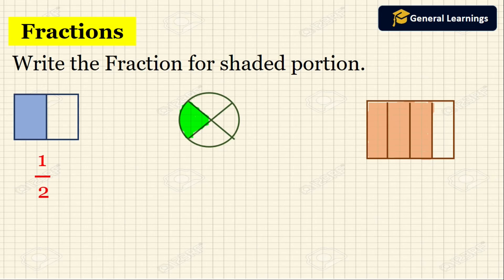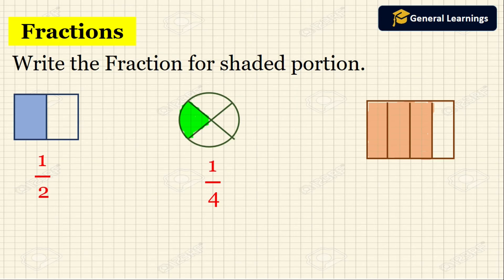In the circle picture, there are 4 parts total, so 4 is the denominator, and 1 part is shaded, so the fraction is 1 by 4. Next, a rectangle has 4 equal parts, so the denominator is 4, and 3 parts are shaded, so the numerator is 3. The fraction is 3 by 4.